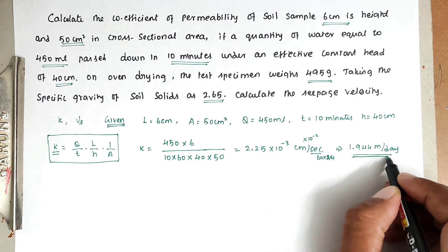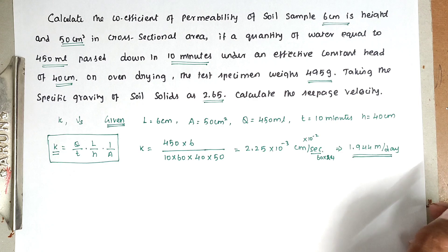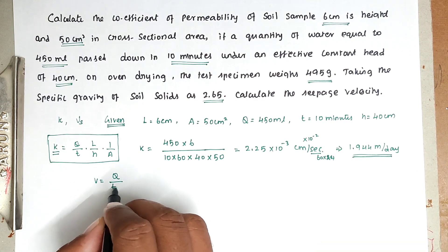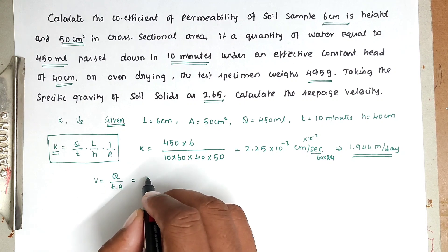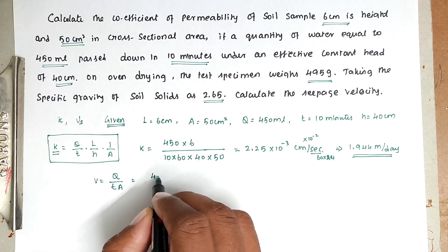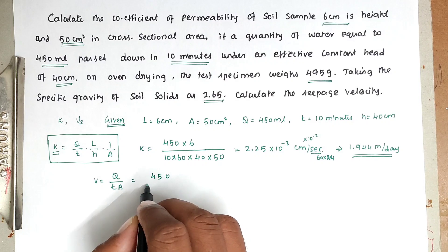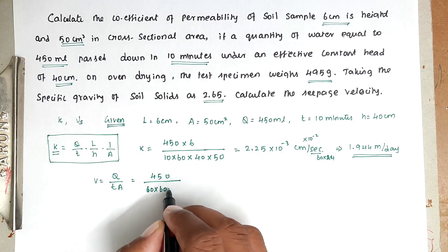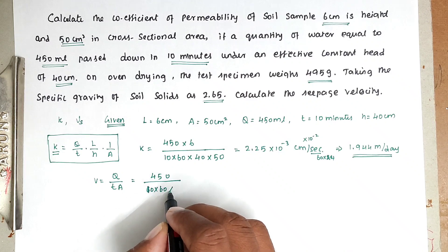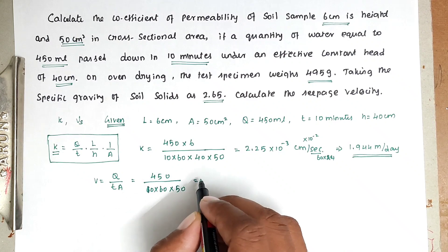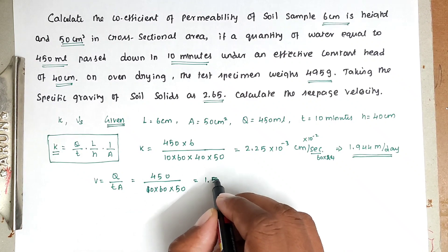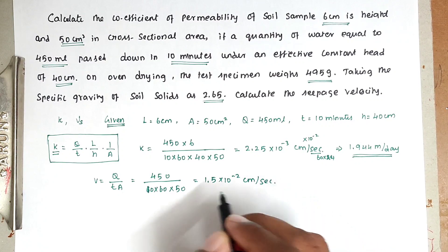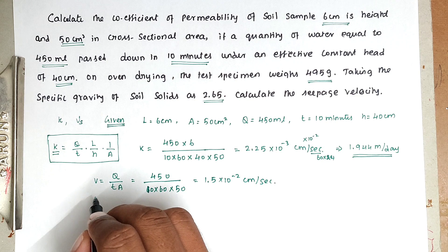Next, we find the discharge velocity: v = Q divided by (T × A). Substituting: v = 450 divided by (10 × 60 × 50). Solving this, we get v = 1.5 × 10⁻² centimeters per second. This is the discharge velocity.